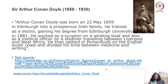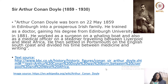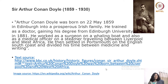Arthur Conan Doyle was born on 22 May 1859 in Edinburgh into a prosperous Irish family. He trained as a doctor, gaining his degree from Edinburgh University in 1881. He worked as a surgeon on a whaling boat and also as a medical officer on a steamer travelling between Liverpool and West Africa. He then settled in Portsmouth on the English South Coast and divided his time between medicine and writing.